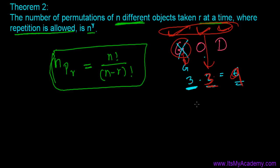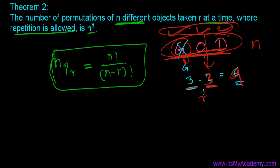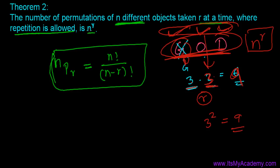So it's three times three, which is nine. In general, we have n objects to place in r positions, so the answer is n to the power r — here that's 3 to the power 2, which equals 9. This is the formula when repetition is allowed.